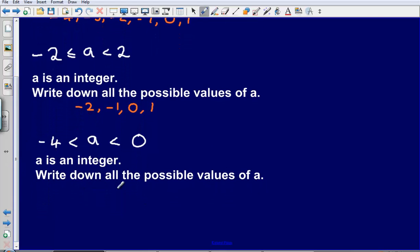Okay, last one. a is an integer. Write down all the possible values of a. So what whole numbers could a be in this occasion? It can't be minus 4, because we're told that a is greater than minus 4. So it could be minus 3. It could be minus 2. It could be minus 1.